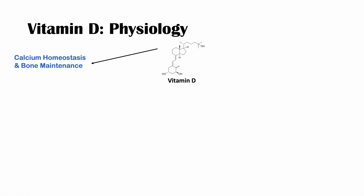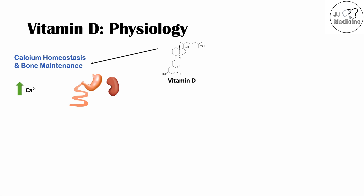Calcitriol is important in calcium homeostasis and bone maintenance. When we have calcitriol, this active form of vitamin D, it helps us absorb calcium and phosphate from our gastrointestinal system. It also helps us reabsorb calcium and phosphate from our renal system, from our kidneys.